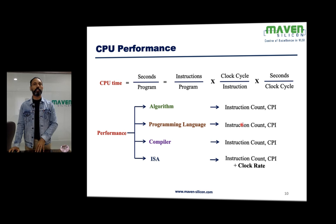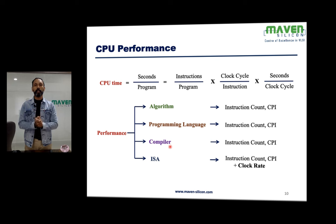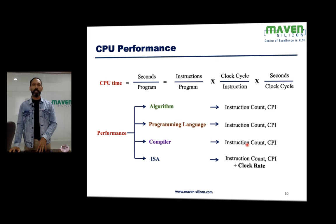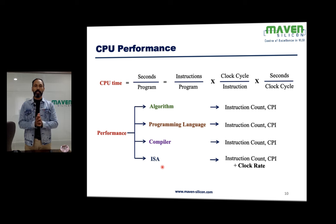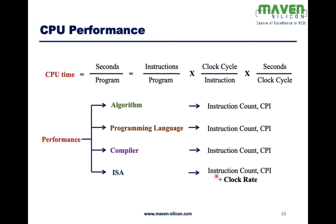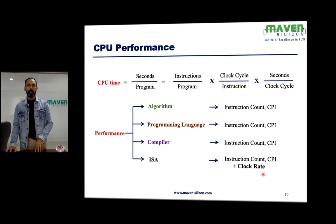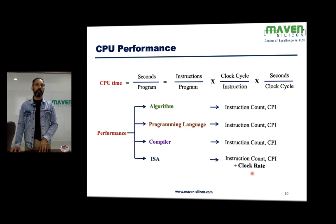The compiler also has a significant impact: an efficient compiler that produces fewer instructions will greatly reduce instruction count. The ISA (Instruction Set Architecture) is the definition for both the compiler and processor design — it controls everything: instruction count, CPI, and clock rate.